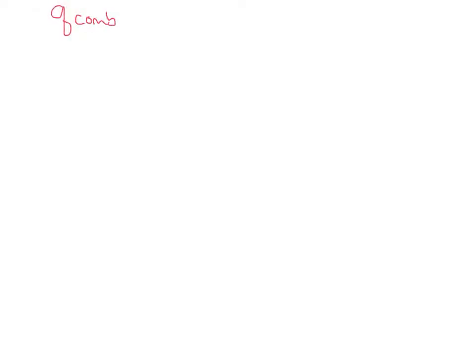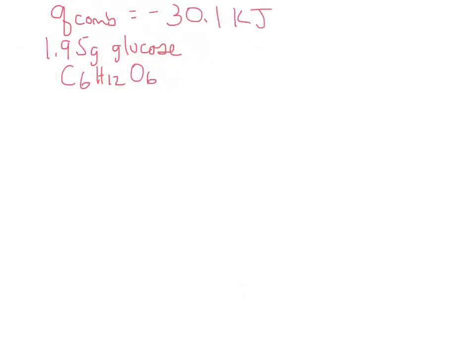The heat of combustion from burning 1.95 grams of glucose — C6H12O6 — was negative 30.1 kilojoules. Now we need to use this information as a conversion factor: if we burn 1.95 grams of glucose we get 30.1 kilojoules of heat, and we'll use that to scale up to a whole mole of glucose.